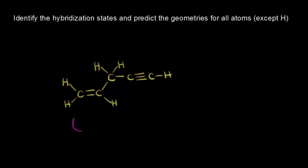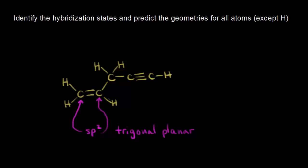Let's start with this carbon right here. The fast way of identifying a hybridization state is to notice that carbon has a double bond to it. Therefore, it must be sp2 hybridized. If it's sp2 hybridized, we know the geometry around that carbon must be trigonal planar with bond angles approximately 120 degrees. This carbon over here also has a double bond to it, so it's also sp2 hybridized with trigonal planar geometry.